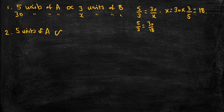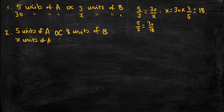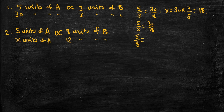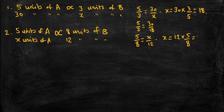Let's do another problem like that. Suppose five units of A are proportional to eight units of B, and this time we want to know how many units of A we would need if we have 12 units of B. Again, set up equivalent fractions: this time we'll have five over eight equal to X over 12.